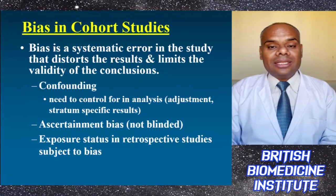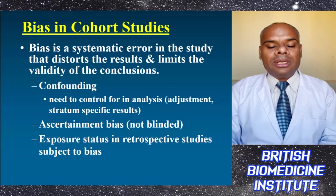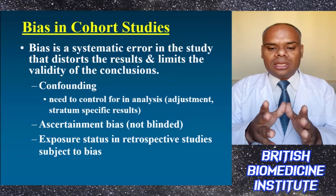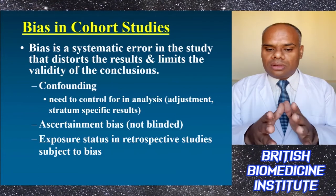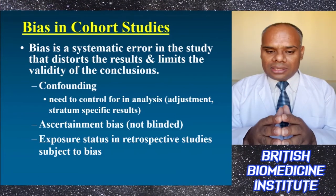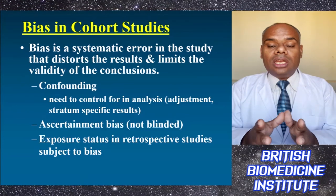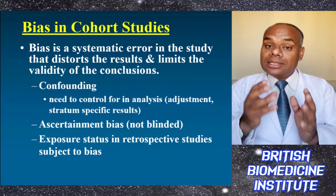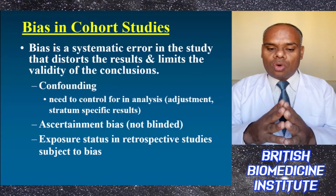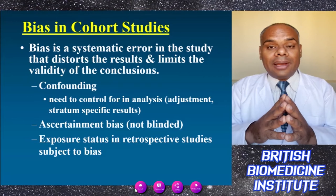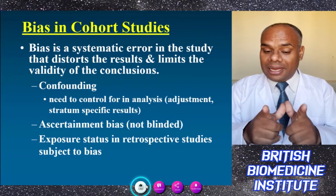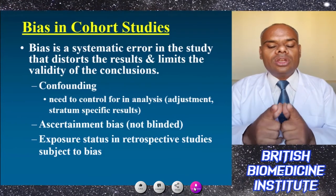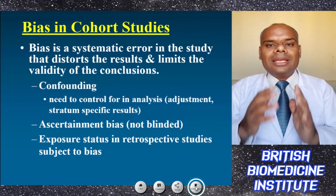There can also be bias in cohort studies. Bias is a systematic error in the study that distorts the result and limits the validity of the conclusion. There are various confounding factors to control for in analysis, such as adjustment and stratum-specific results. There also needs to be control over ascertainment bias if the study is not blinded, and exposure status in retrospective studies must be carefully managed to prevent bias.